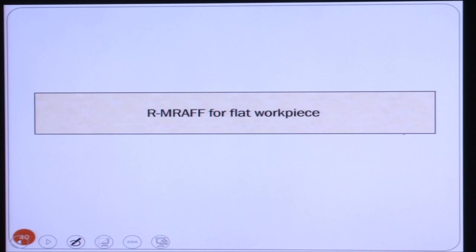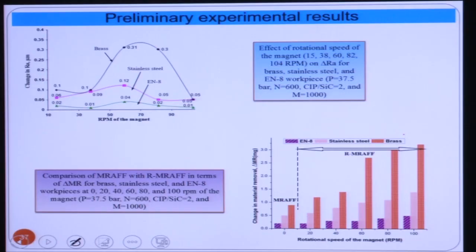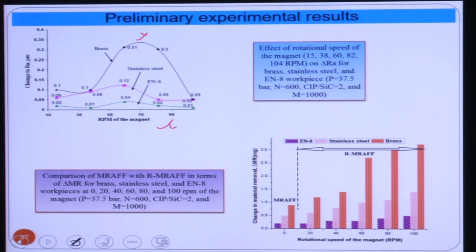We now discuss the experimental results on flat workpieces using rotational MR finishing. Three different workpiece materials were considered: brass, stainless steel, and a magnetic (Alnico-type) workpiece. With increasing rotational speed of the magnet, the change in Ra (initial Ra minus final Ra) increases and reaches an optimum value for all three materials — this optimum RPM is where the change in Ra is maximum.